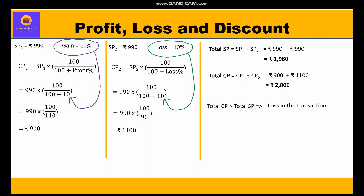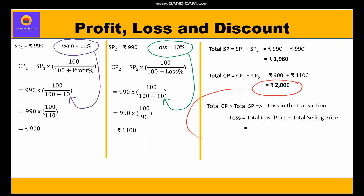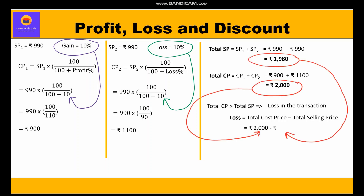Since total cost price is greater than total selling price, there is a loss in the transaction. Loss equals total cost price minus total selling price, which is 2000 − 1980 = rupees 20.